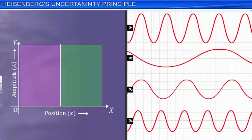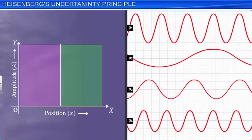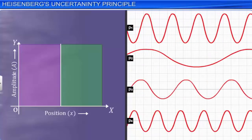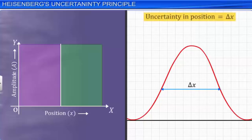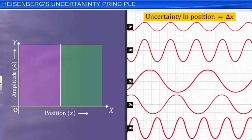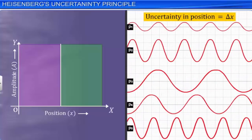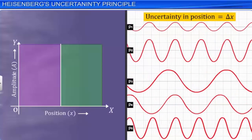Now, if we consider a number of such wave functions, each with a different De Broglie wavelength, superposing each other, it results in a wave function as shown. The superposed wave function does not have a well-defined peak. Rather, it represents the approximate position of the particle. Therefore, we can say that there is some uncertainty, delta x, in the location of the particle. Thus, for a finite uncertainty in the position delta x, the wave function is built up of several wavelengths spread around the central wavelength.